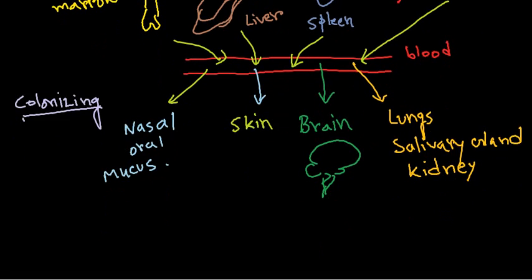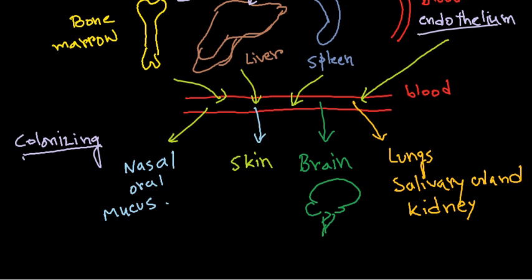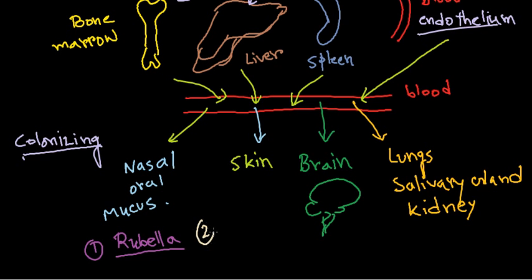Let's look at examples for each colonization target. For viruses that colonize through the bloodstream into the nasal or oral mucous regions, the example is rubella virus. For viruses that colonize in the skin, the example is measles. For viruses that colonize in the brain — which is why they are much more dangerous — the example is poliovirus.